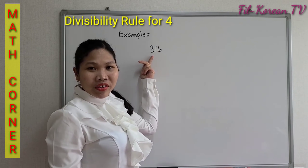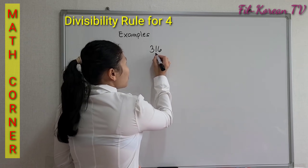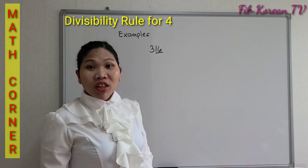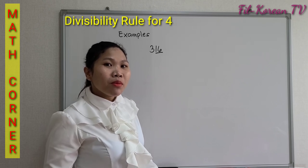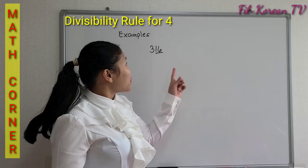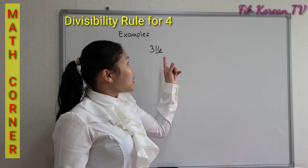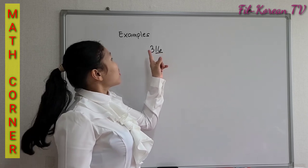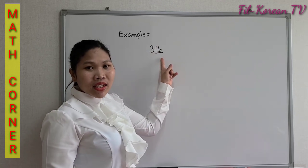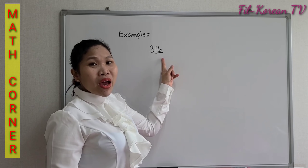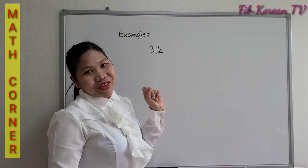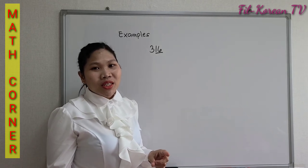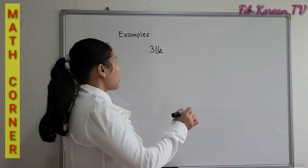Example: 316. The last two digits form a number 16. 16 is a multiple of 4 because when we multiply 4 times 4, the product is 16. So since it is a multiple of 4, therefore 316 can be divided by 4 with an exact answer. You just look at the last two digits of a number.